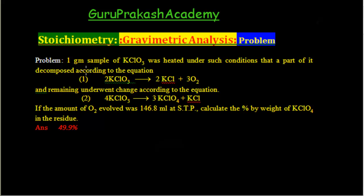This question says: a 1 gram sample of KClO₃ was heated under such conditions that a part of it decomposed according to a given equation, and the remaining underwent change according to a second given equation. If the amount of O₂ evolved was a given value at STP, calculate the percentage by weight of KClO₄ in the residue.